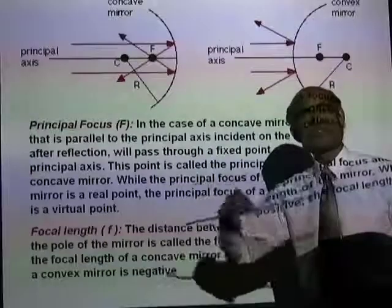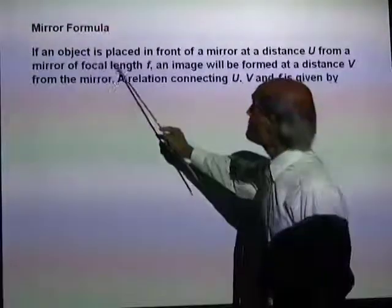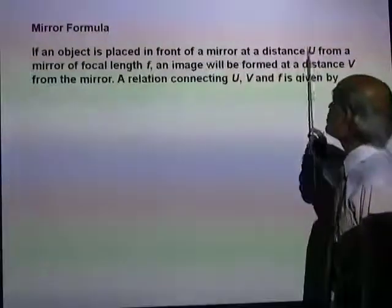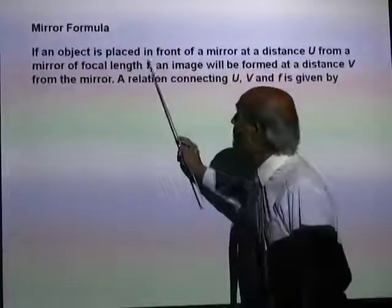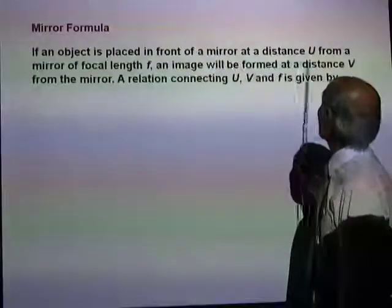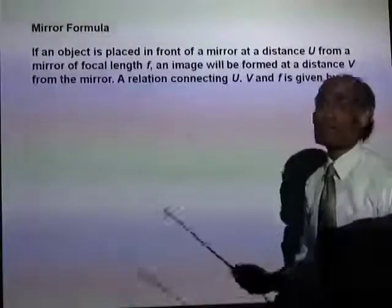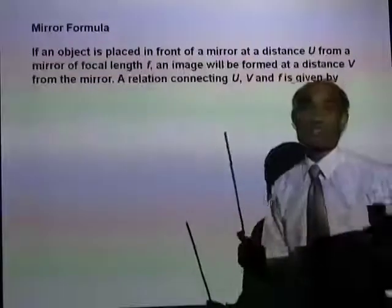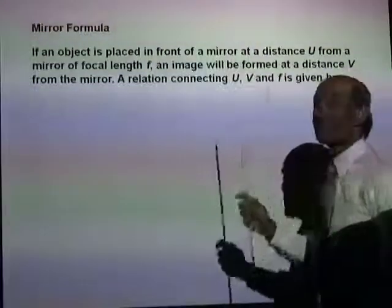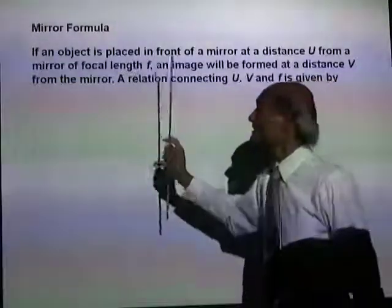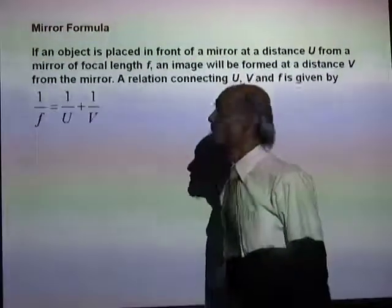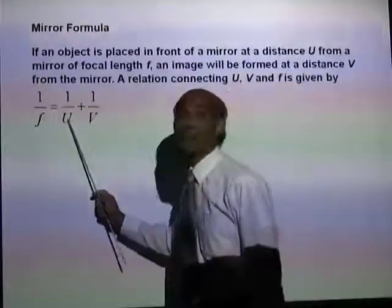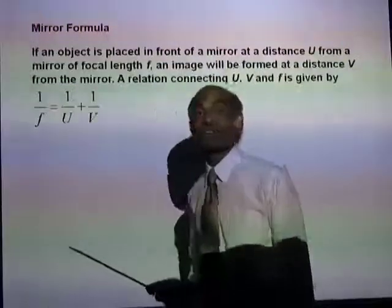These are very simple ideas. The mirror formula: if an object is placed in front of a mirror at a distance U — the object distance — and F is the focal length, an image will be formed at distance V from the mirror — the image distance. Then 1 over F equals 1 over U plus 1 over V is the mirror formula. If you can measure U and V, you can calculate the focal length of the mirror.